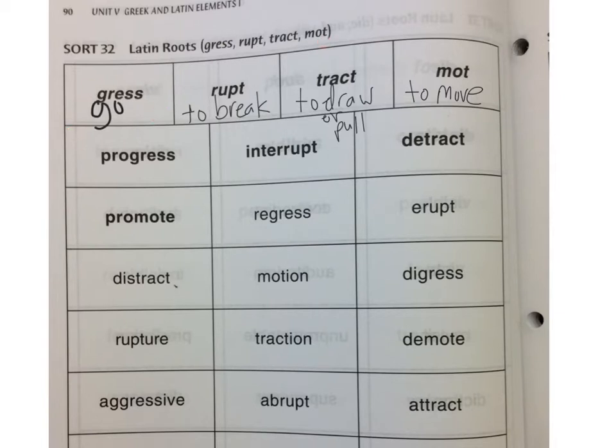Gress means to go, rupt means to break, tract means to draw or pull, and mot means to move.